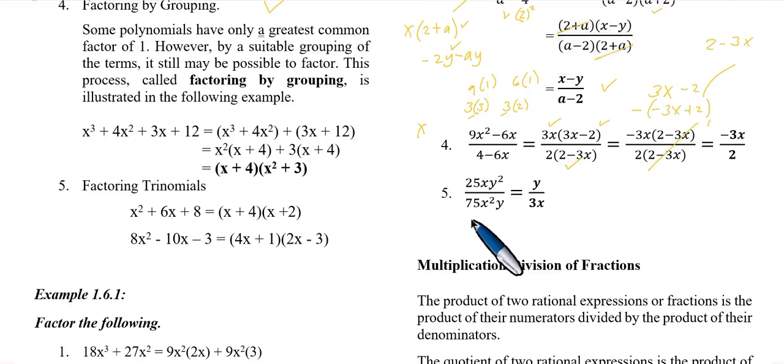Number 5, 25xy square over 75x square y. First, the coefficient, 25 over 75, simplify to 1 third. For x, since the numerator has smaller exponent, subtract 1 from the 2 in denominator, so x remains in the denominator. For y square, subtract 1 from the 2, so y remains in the numerator. The final answer is y over 3x.